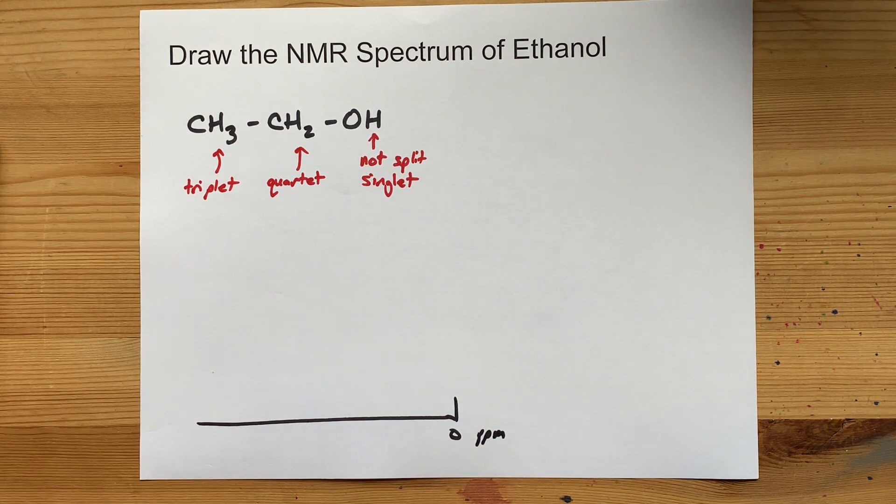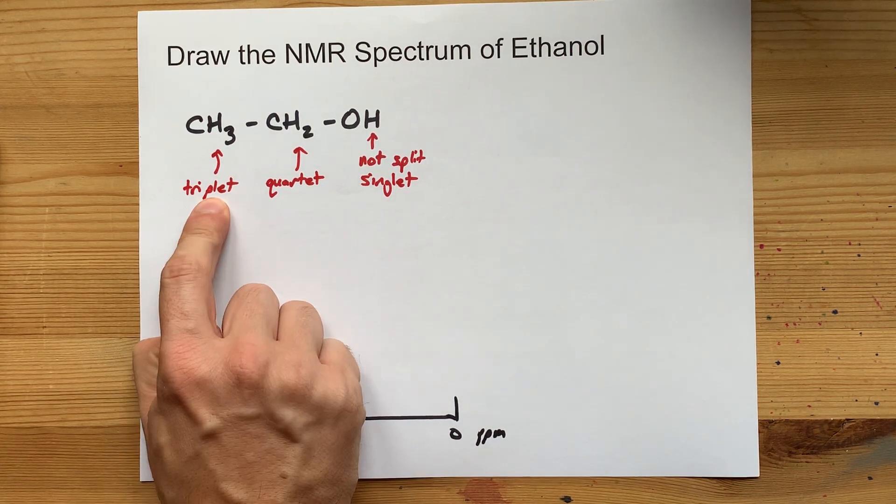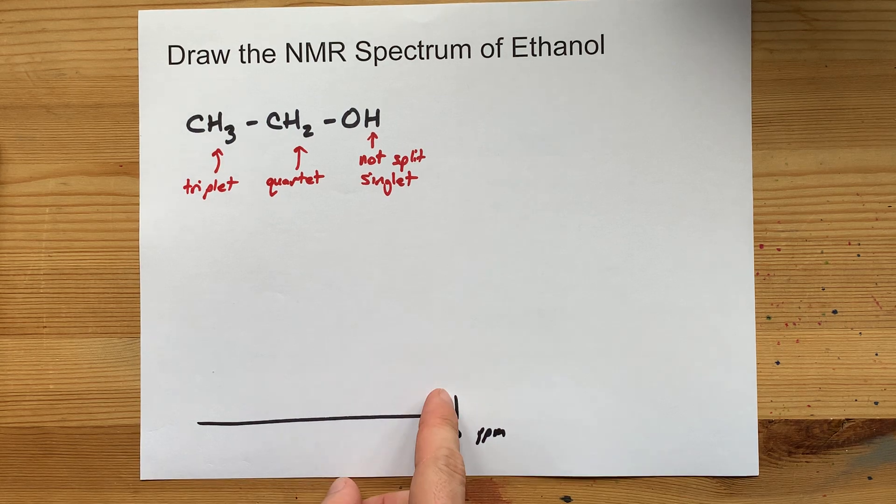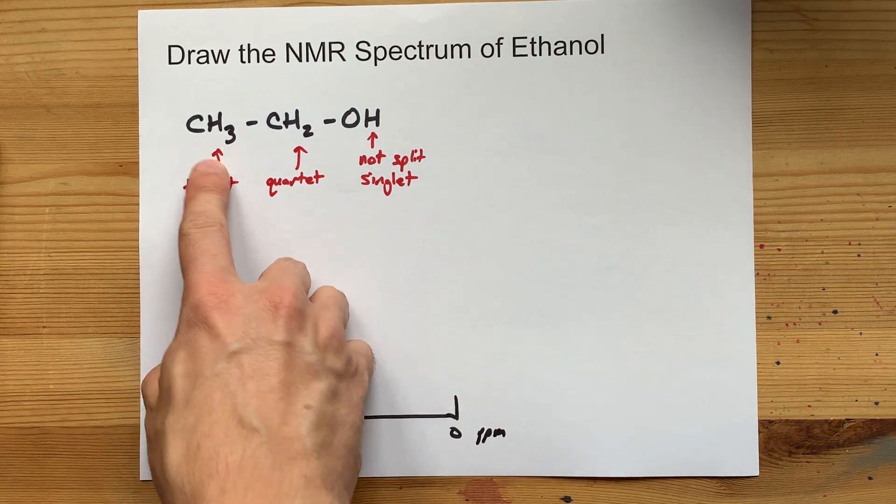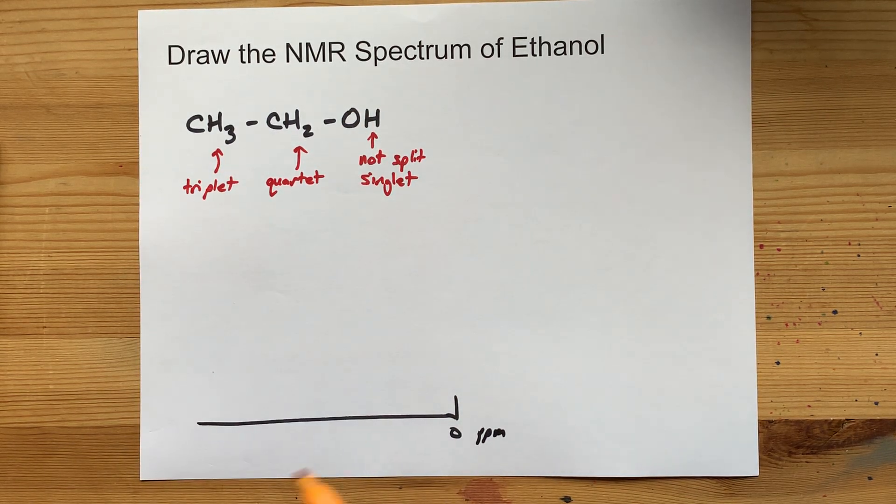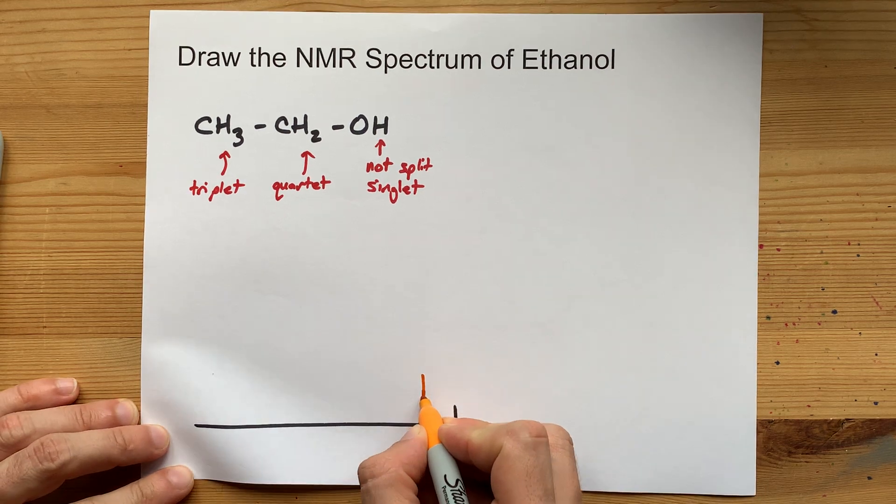Now, we end up with a peak from this one at the lower end of the spectrum because it's farthest away from all of the electronegative atoms. So I'll just put a peak here. Great.